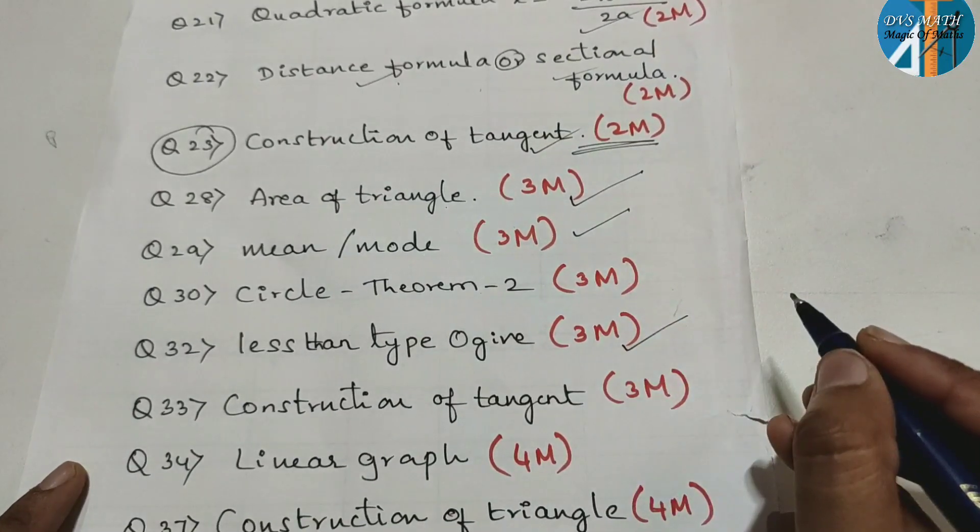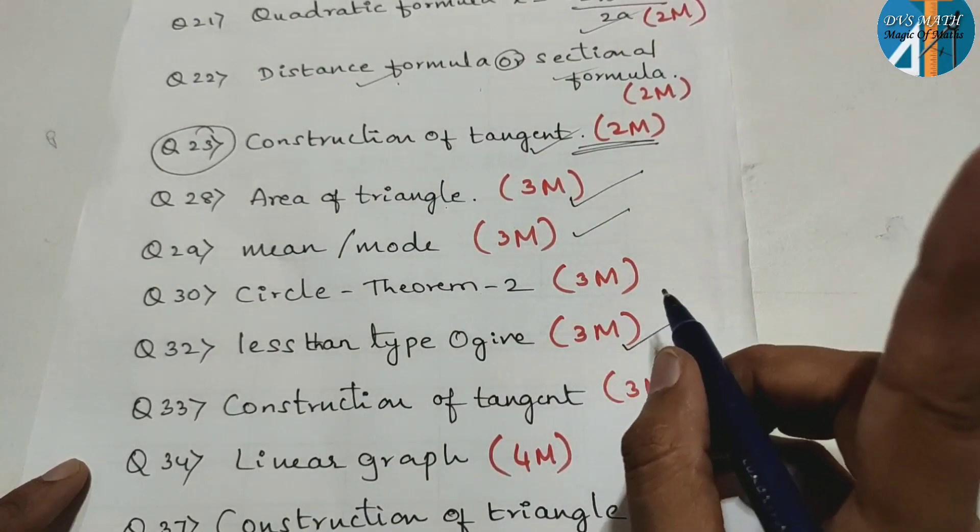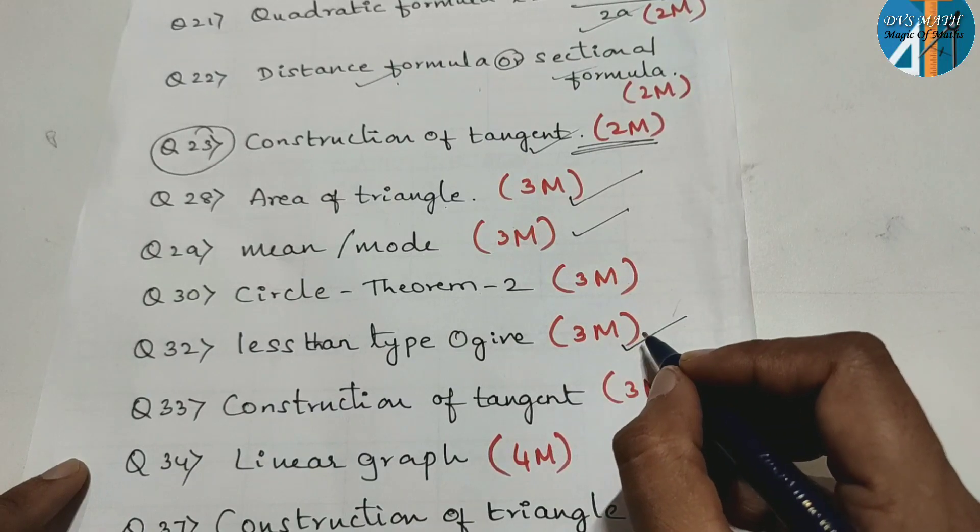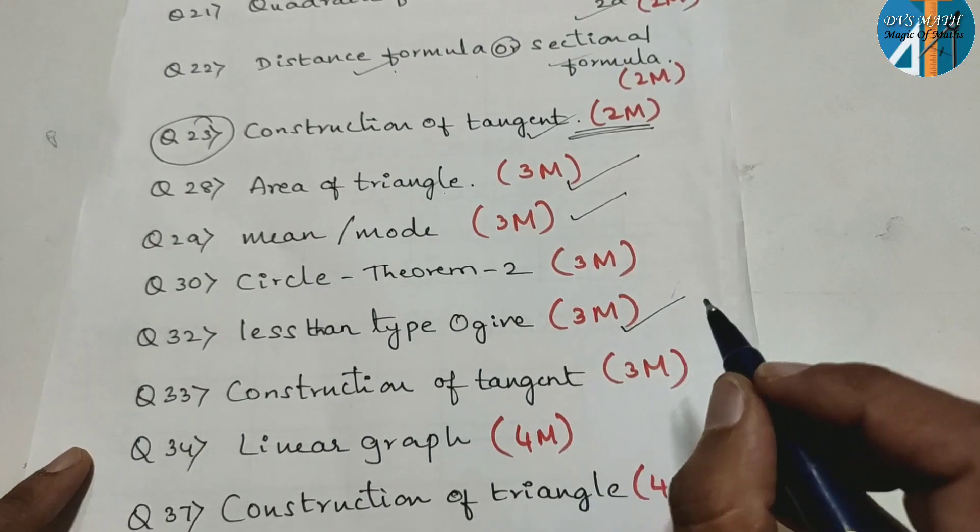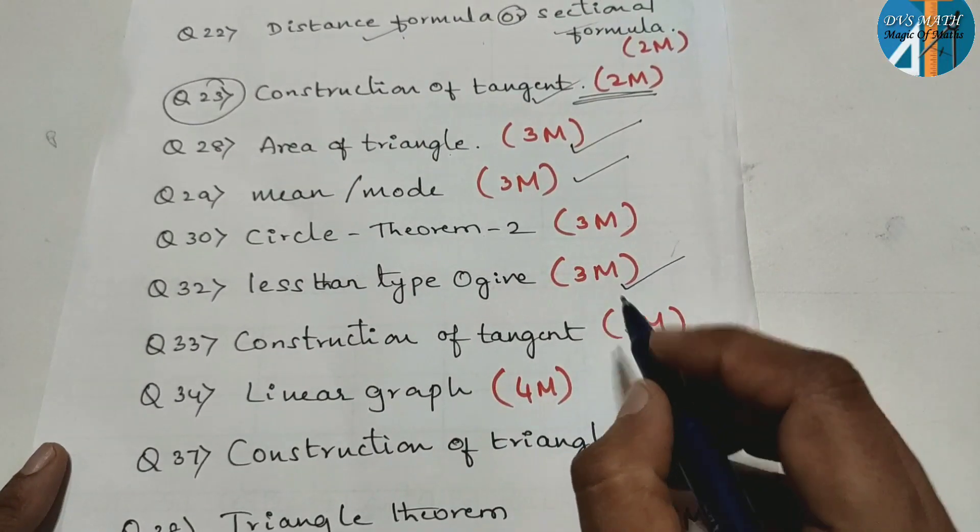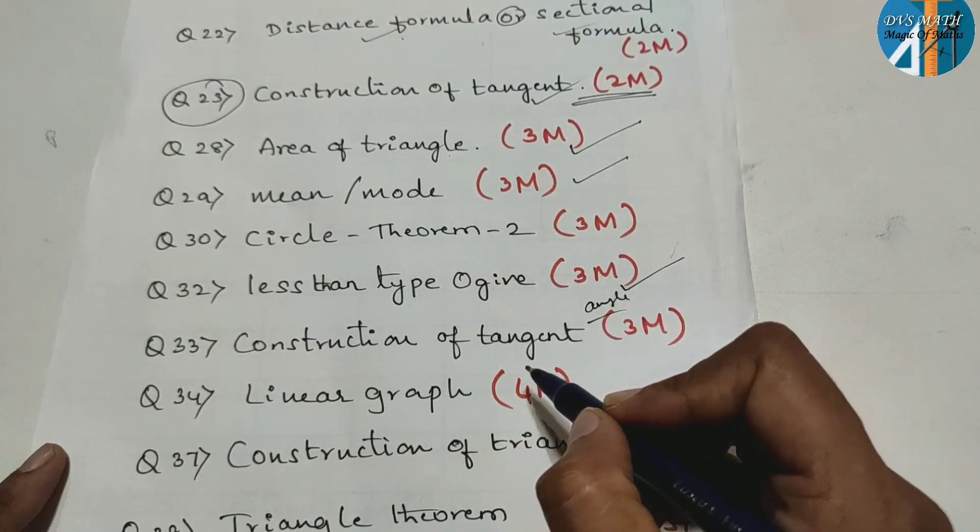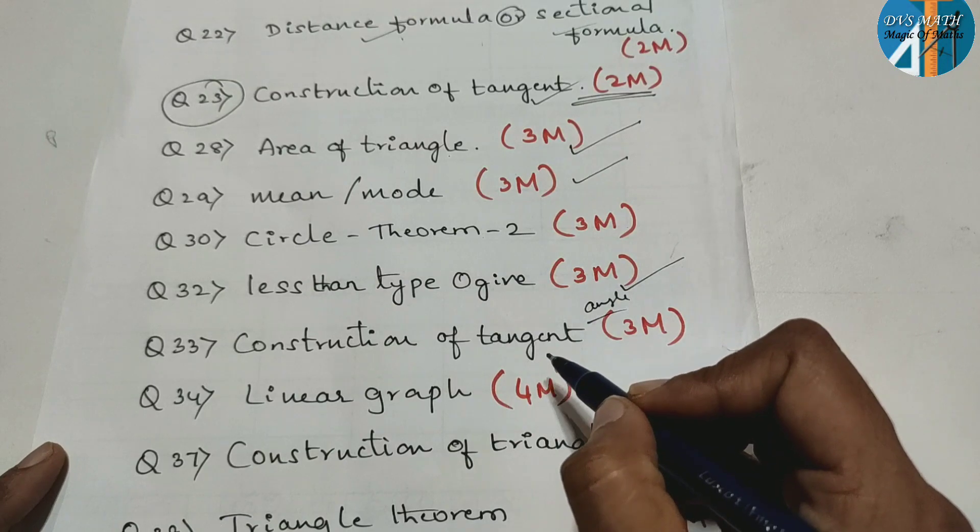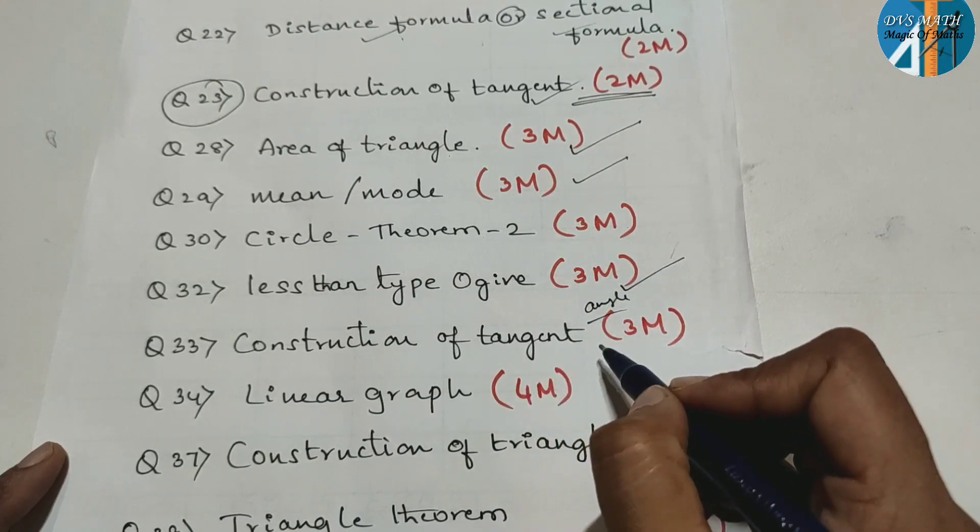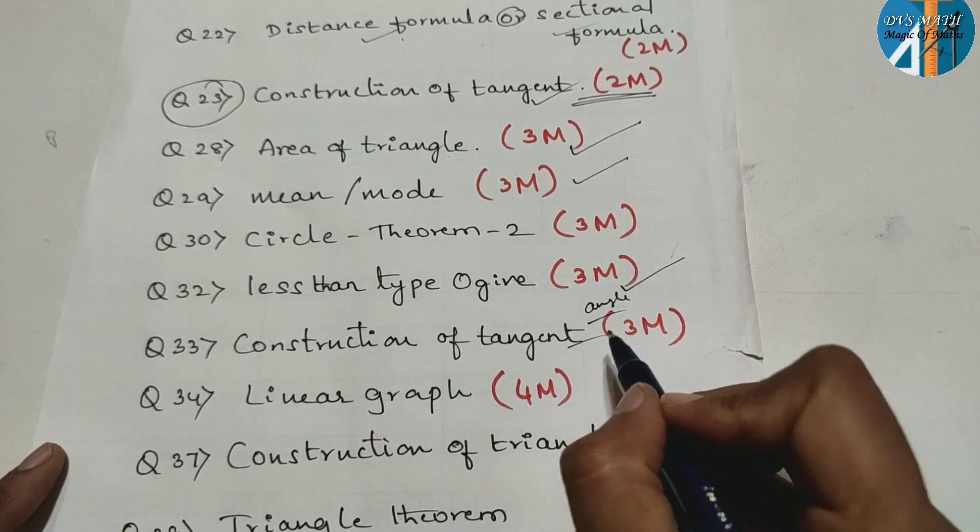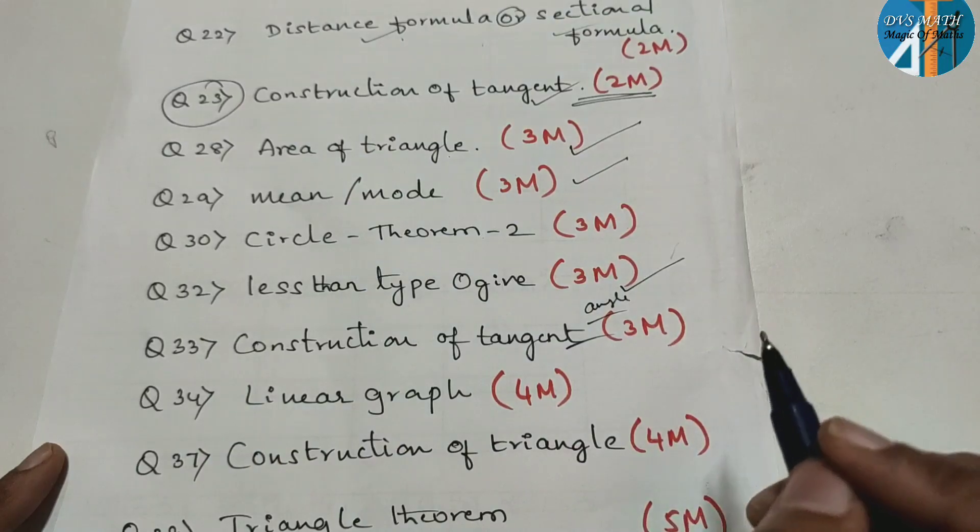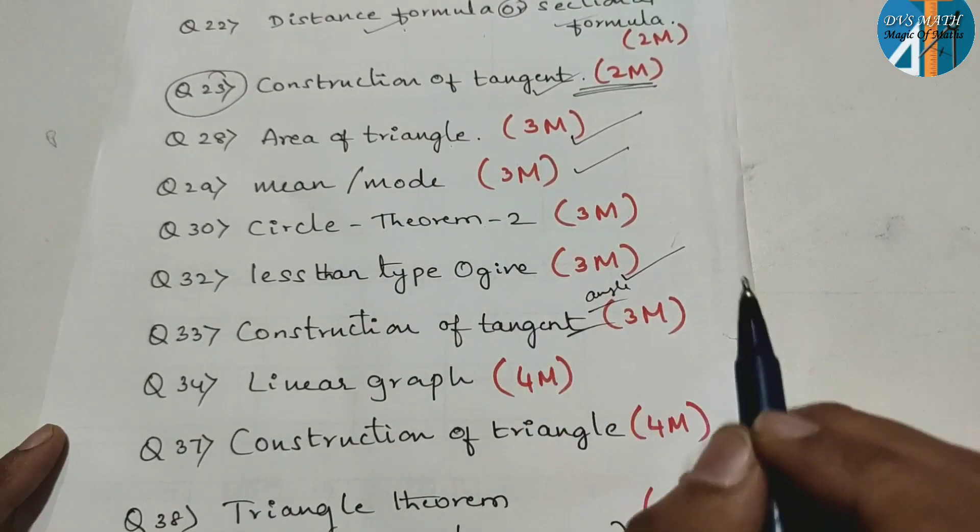Next, you will select less than type ogive. In this, more than type ogive. In this, less than type ogive. Next, construction of tangent, here angle related. So with this, construction of tangent already I have done revision. So in that already I have said. So anyone if you want to see that video, you can refer. So that is 3 marks.